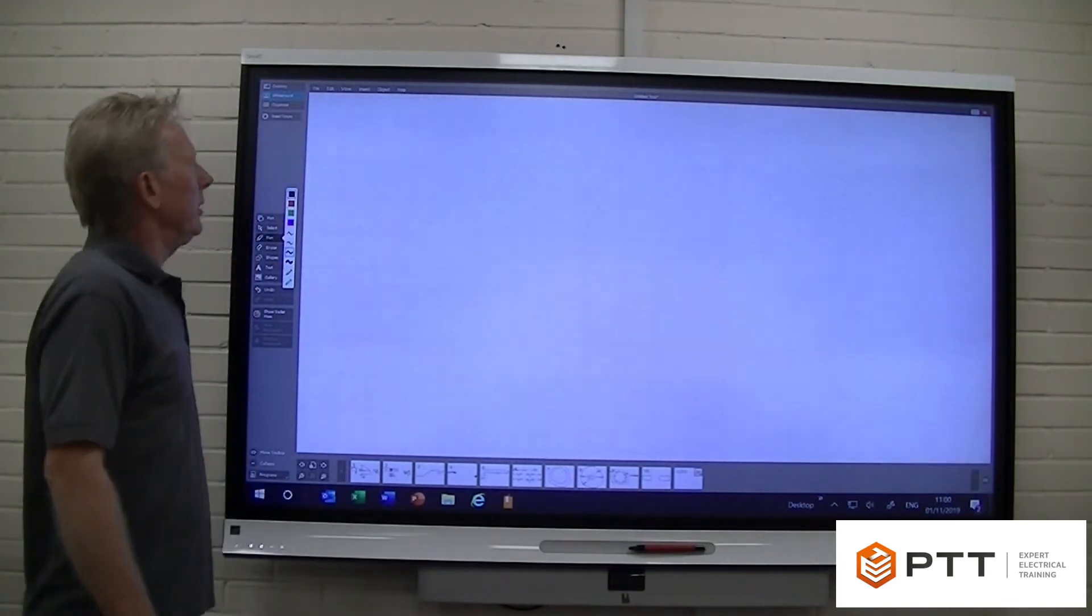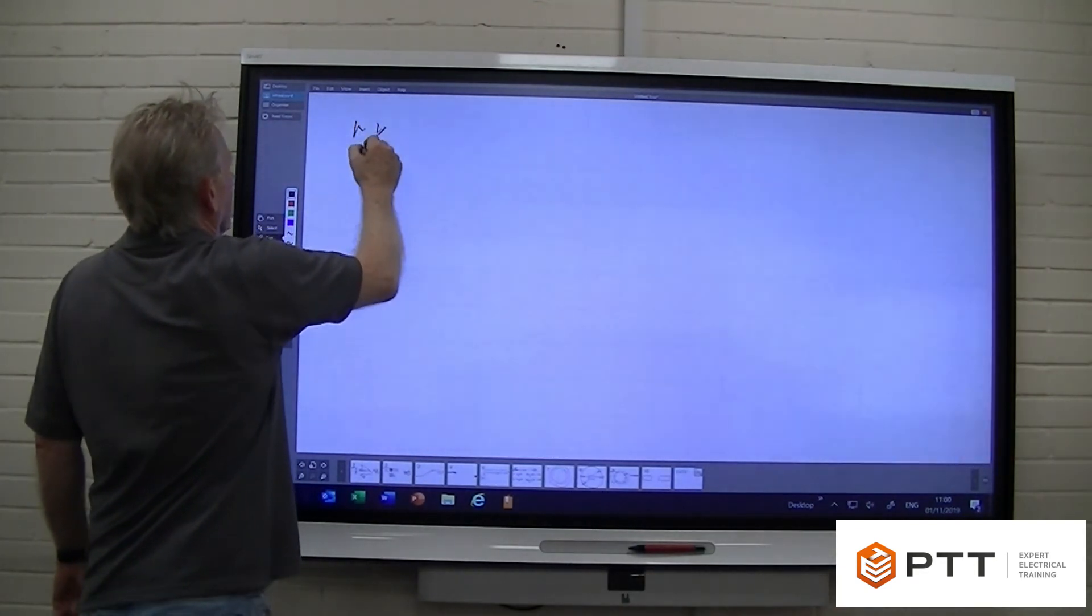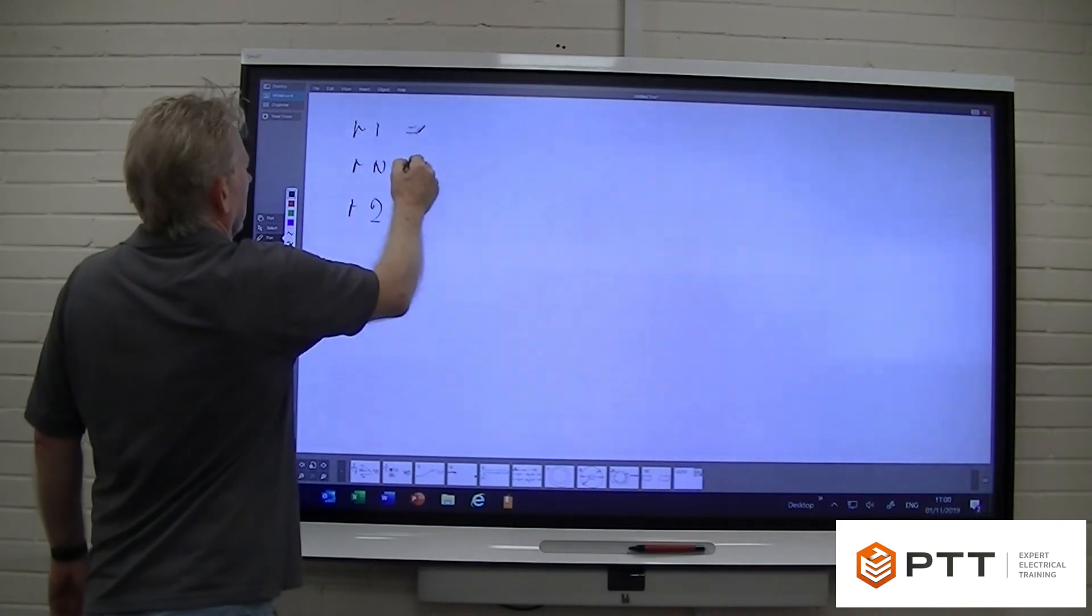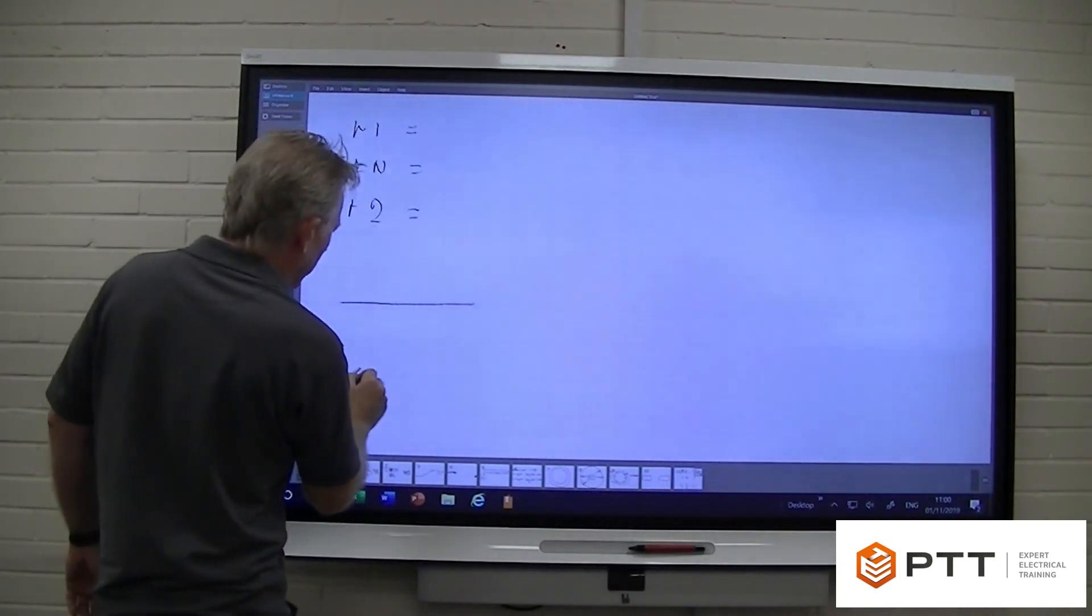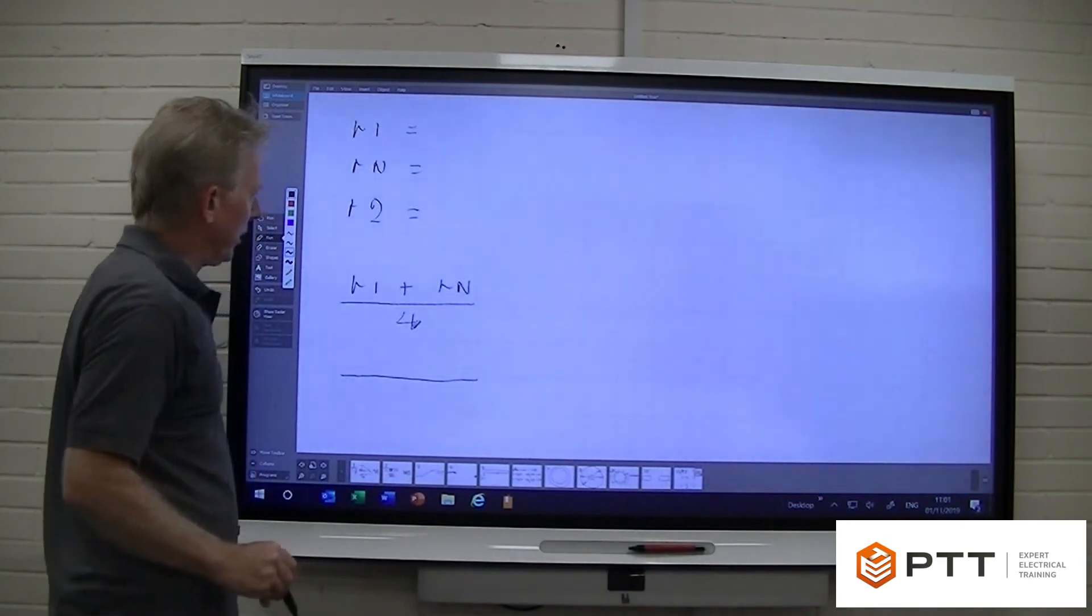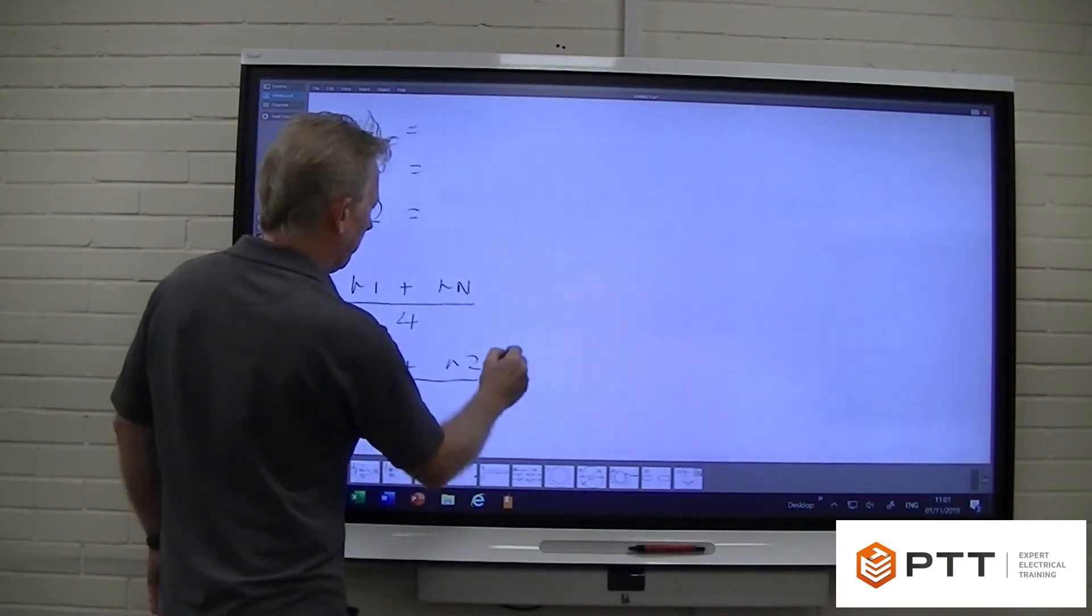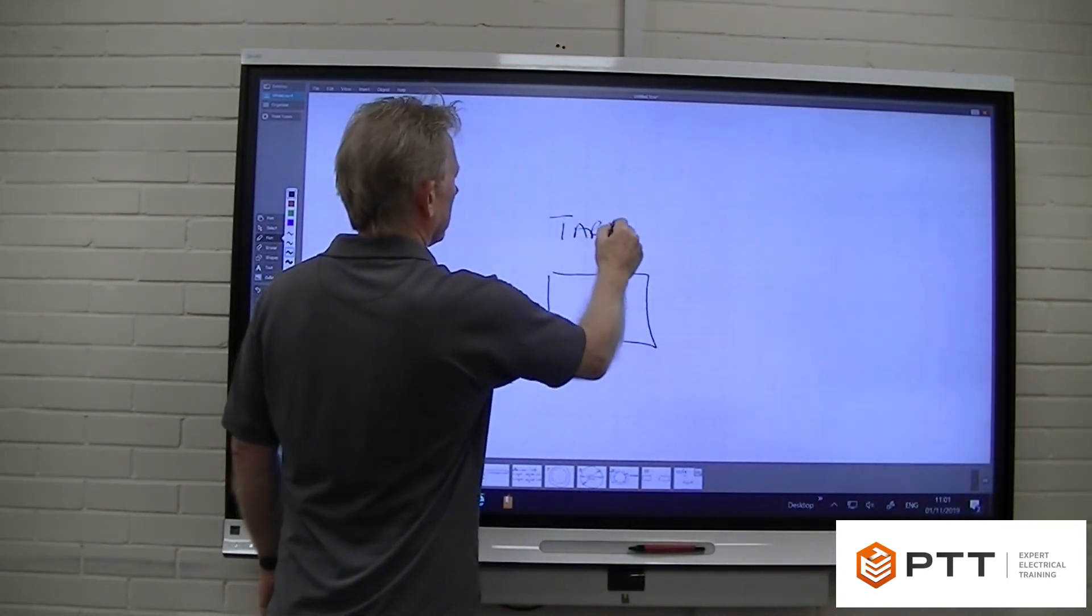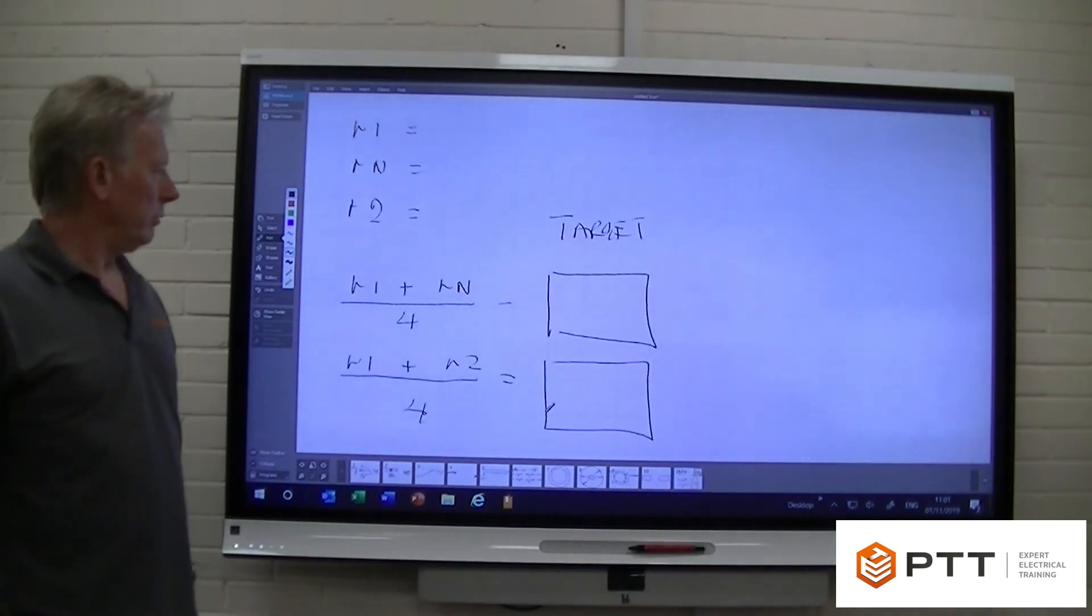What we teach here at PTT to help our students out is we get them to write this down every single time. It's called a pro forma. So we write down little r1, little rn, and little r2. We put an equal sign which just gives them somewhere to record the figures. We write down our two little equations: little r1 plus little rn over 4, and little r1 plus little r2 over 4. And that actually equals our target figure. And we're putting these boxes here just so that there's somewhere for people to record their results.